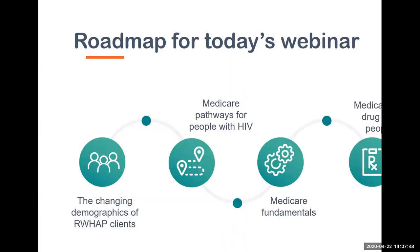Here is a roadmap for what you can expect during today's session. First, we will review the changing demographics of Ryan White program clients. Then we will discuss the Medicare eligibility pathways for people with HIV, followed by a breakdown of the different parts of Medicare: A, B, C, and D. After that, we'll talk about Medicare prescription drug coverage for people with HIV, and finally, the Medicare enrollment process and common enrollment challenges for Ryan White programs. We'll introduce several ACE TA Center resources throughout the presentation, and we'll end with a Q&A session.